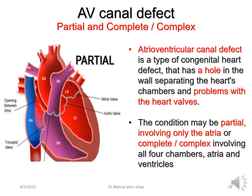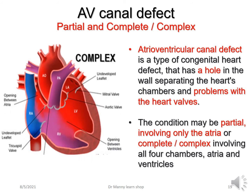More complex cardiac anomalies include an AV — atrioventricular — canal defect, which can be partial or complete. An AV canal defect is a type of congenital heart defect with a hole in the wall separating the heart's chambers and problems with the heart valves, which can be abnormal or missing. The condition may be partial, involving only the atria, or complex, involving all four chambers — atria and ventricles.